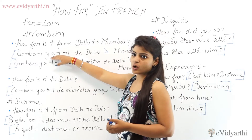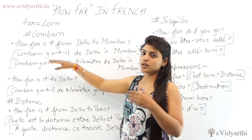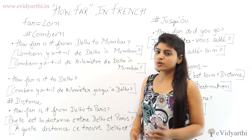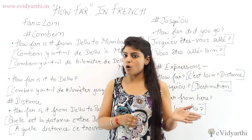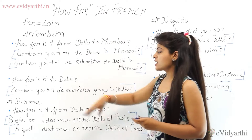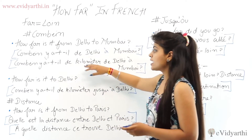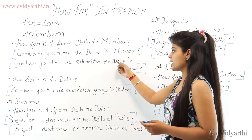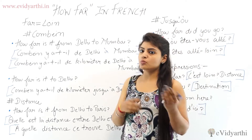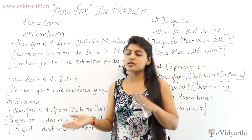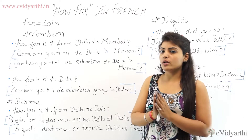'Y a-t-il' is used because there is an inversion. If you have any confusion about inversion, you can see a previous video in which I have explained how to form the question using the inversion form. You can also say 'Combien y a-t-il de kilomètres de Delhi à Mumbai?' — meaning how far is it, or how many kilometers are between Delhi and Mumbai? Both will be correct.